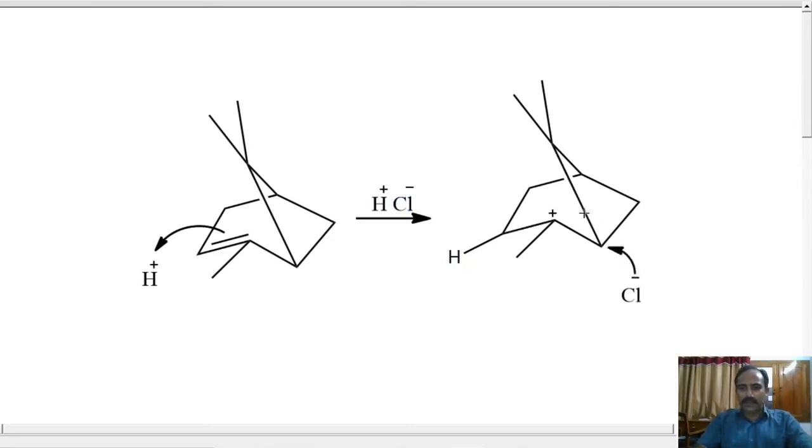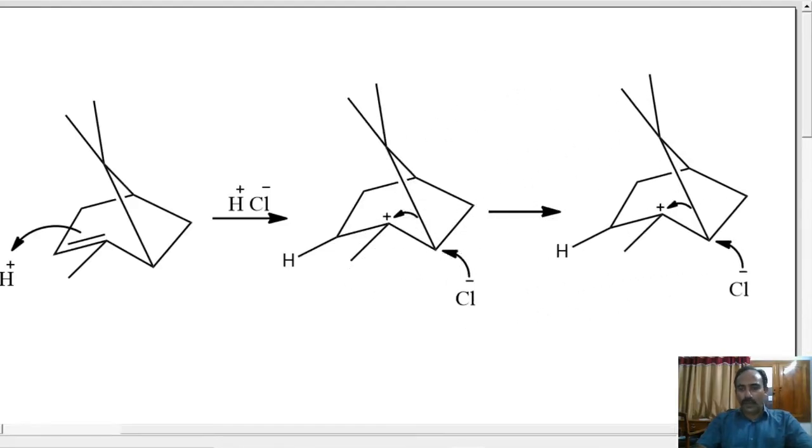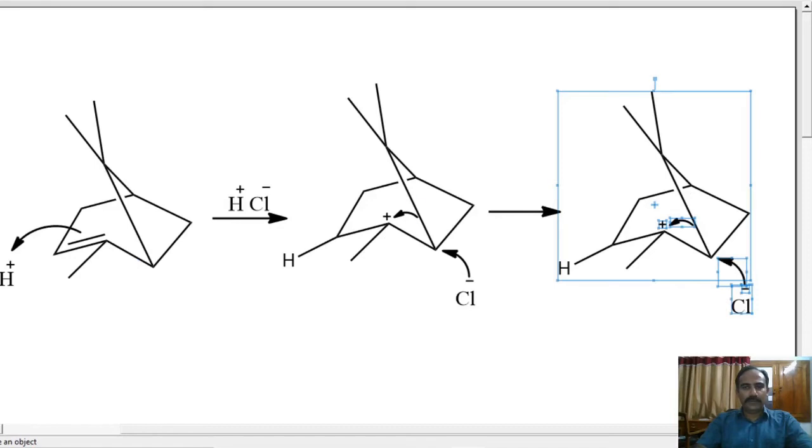Cl- attacks this carbon while this bond breaks and this carbon forms a bond with this carbocation. Let us copy down the whole thing and try to make sense of the curved arrows. There is going to be a new bond between this carbon and this chlorine, so there is no negative charge on chlorine now. This bond is no longer here. This breaks and this will form a bond with this carbon. And the positive charge is no longer there.